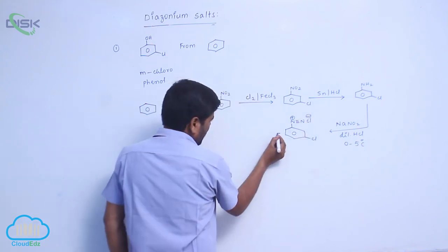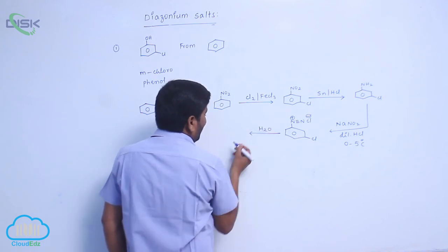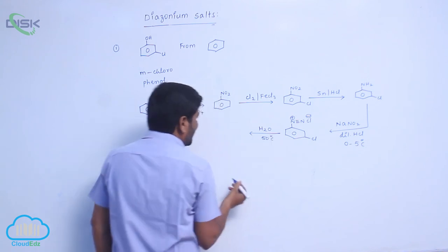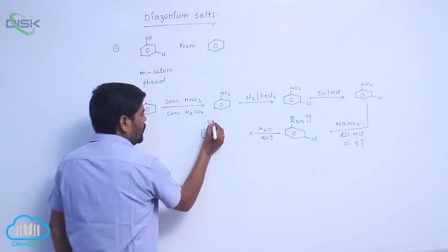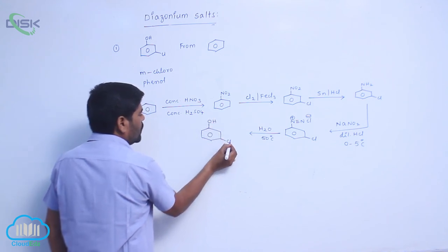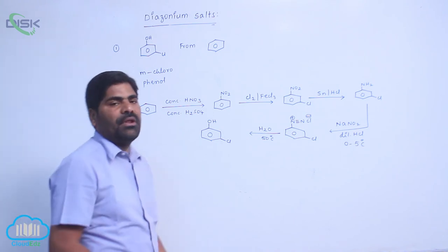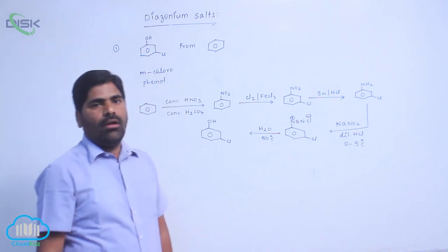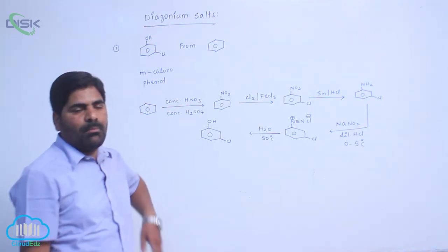To this, water is added at approximately 50 degrees centigrade to form OH, which is metachlorophenol. This is one of the good synthesis methods for the preparation of metachlorophenol from benzene.